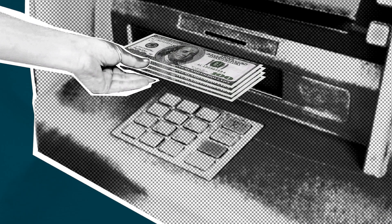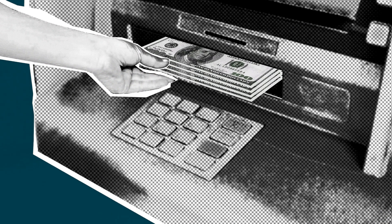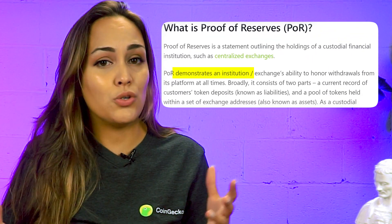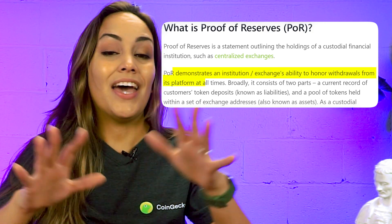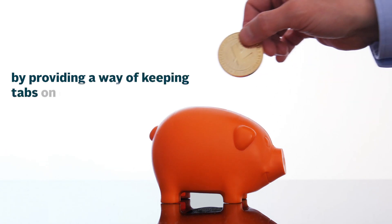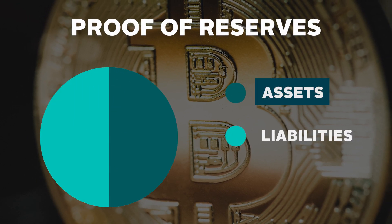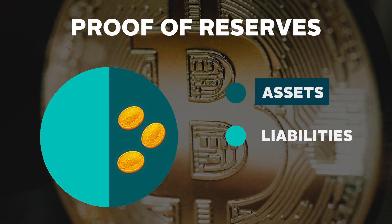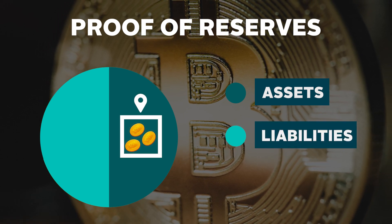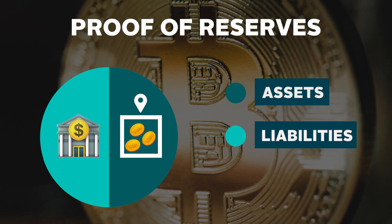Ideally, any exchange user should be able to withdraw their funds at any time. Proof of reserves is a cryptographic method that demonstrates an exchange's or institution's ability to honor withdrawals from its platform at all times by providing a way of keeping tabs on customer funds. Broadly, it consists of two parts: assets, which are represented by a pool of tokens held within a set of exchange addresses, and liabilities, which would be a current record of customers' deposits. These two should be equal at all times, since custodial financial institutions like centralized exchanges are not supposed to be utilizing customers' funds for other purposes.